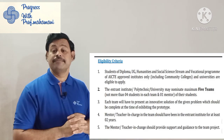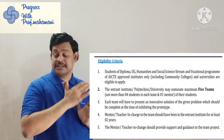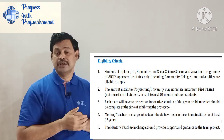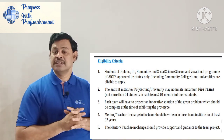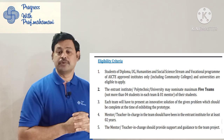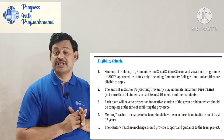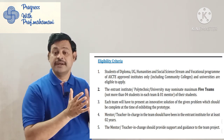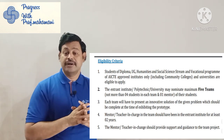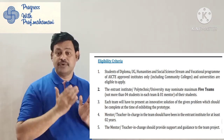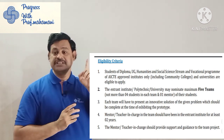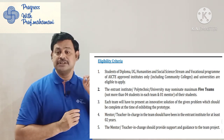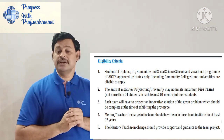Regarding eligibility criteria: students from diploma programs — and this is important because many diploma students are not coming forward to apply, but they are also eligible. UG students from humanities, social science streams, and occasional programs of AICTE-approved institutions including community colleges and universities are also eligible. Each polytechnic or university may nominate five teams of their students.